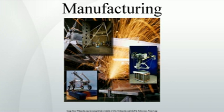Manufacturing takes place under all types of economic systems. In a free market economy, manufacturing is usually directed towards the mass production of products for sale to consumers at a profit. In a collectivist economy, manufacturing is more frequently directed by the state to supply a centrally planned economy. In mixed market economies, manufacturing occurs under some degree of government regulation.